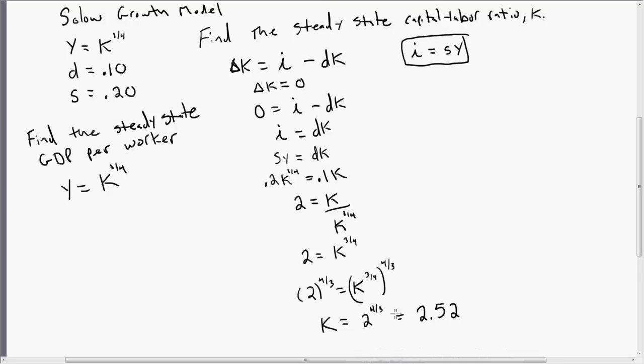So in the steady-state, K is 2.52. So plugging 2.52 in for K, it's raised to the one-fourth power. We get 1.26. So that is the output per worker in the steady-state, 1.26.